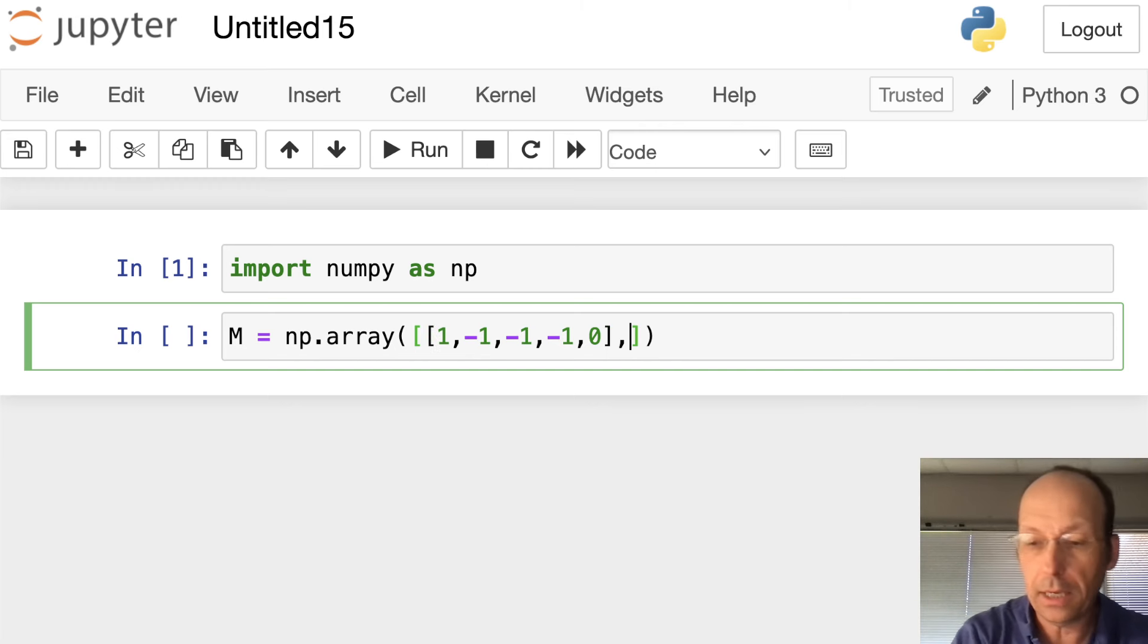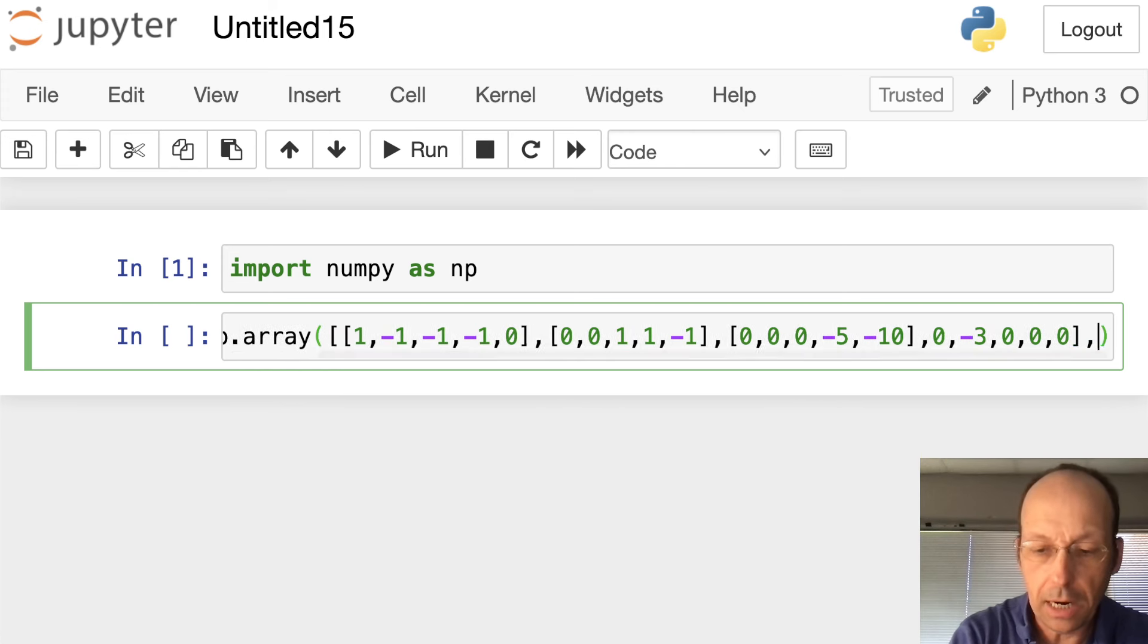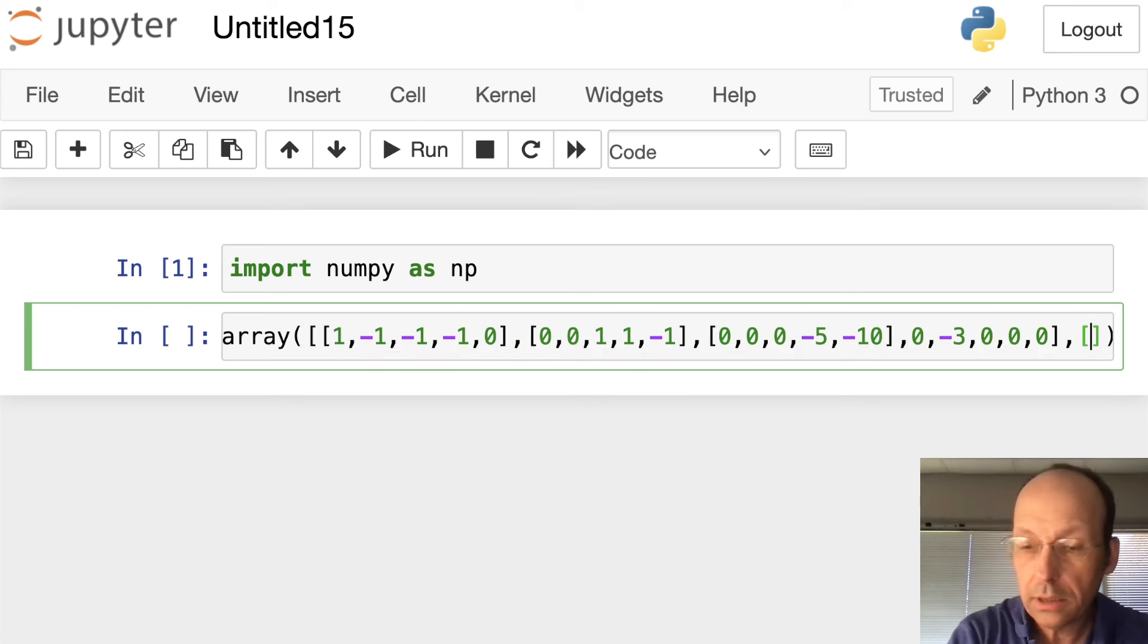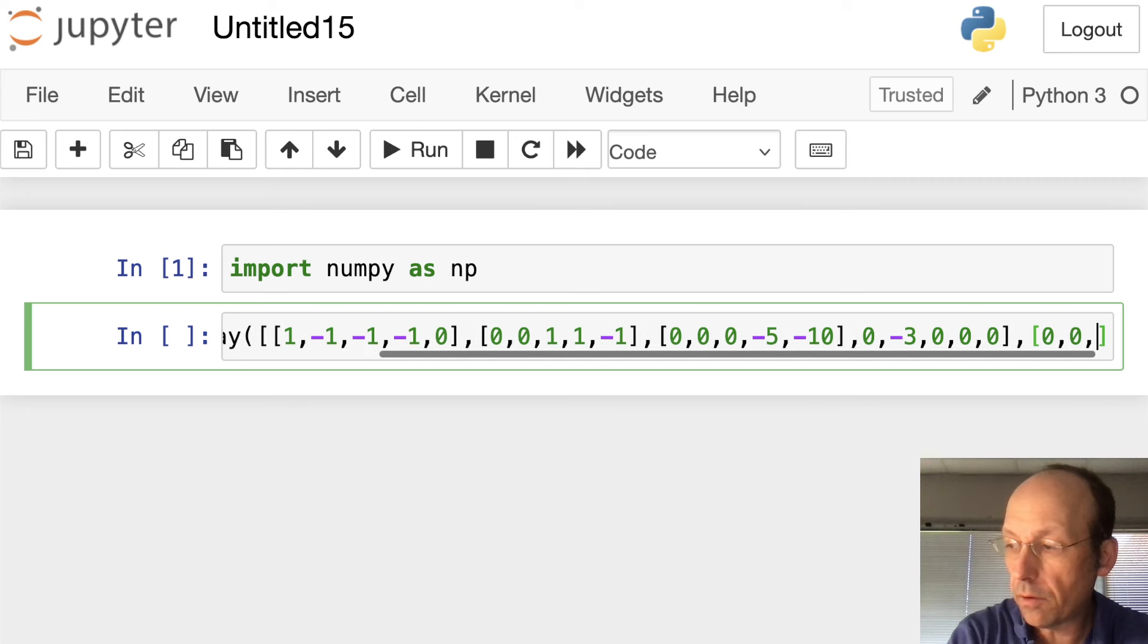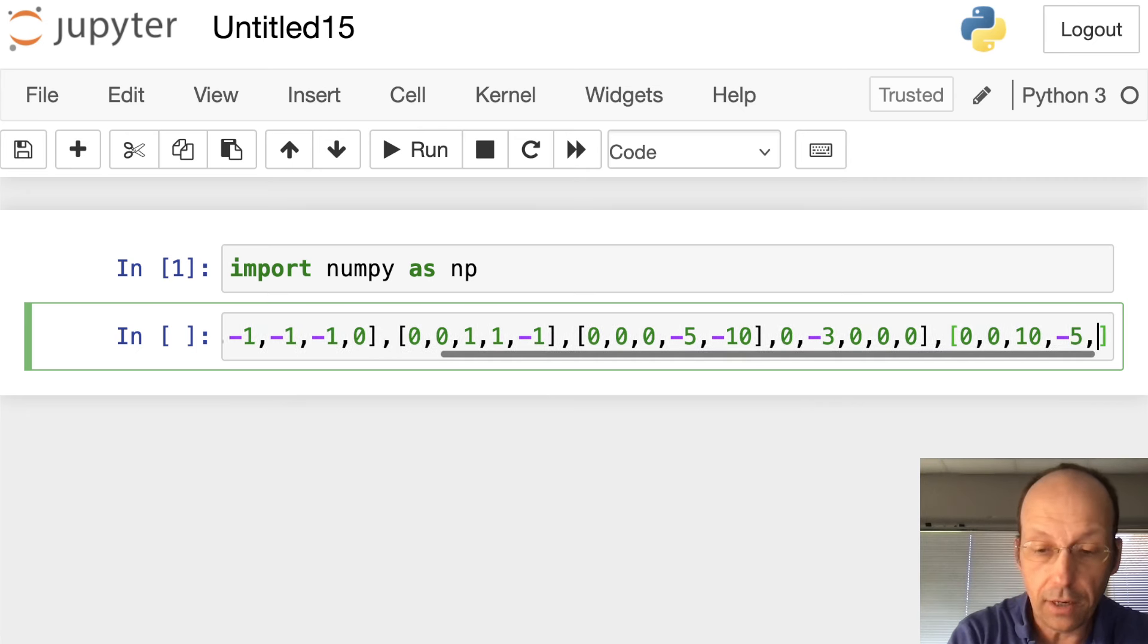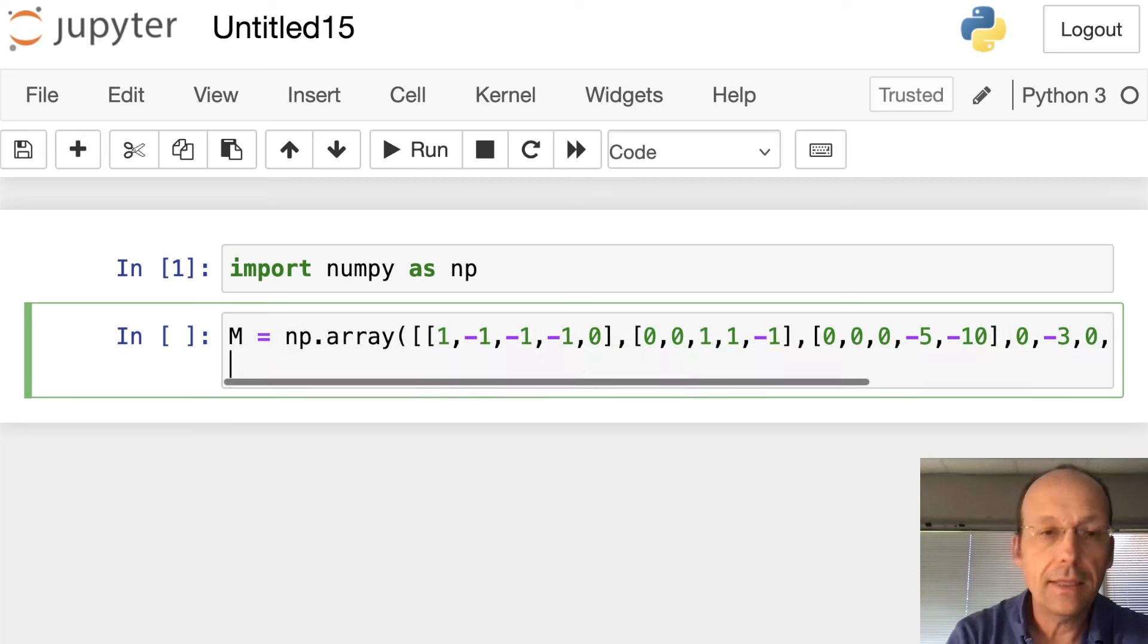I'm just typing in that matrix right there. Can you see in the lower hand down here? I'm just typing that in. So that's my first row. It does have 5, 1, 2, 3, okay. And then my next one is going to be another list, 0, 0, 1, 1, negative 1. My next one is going to be equal to 0, 0, 0, negative 5, negative 10. Then my next one is going to be 0, negative 3, 0, 0, 0. And then my last row is equal to 0, 0, 10, negative 5, 0. That's going to do it.